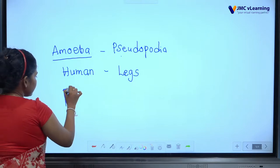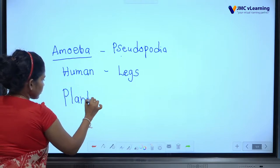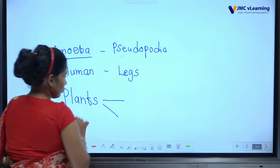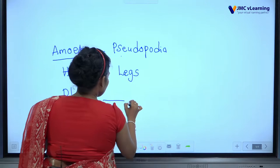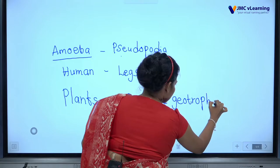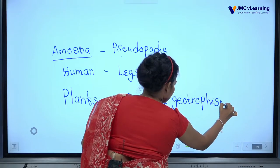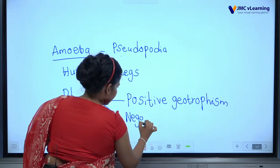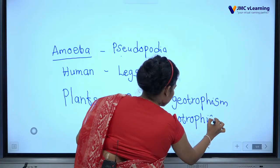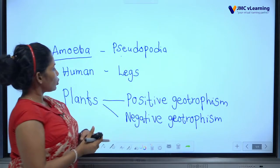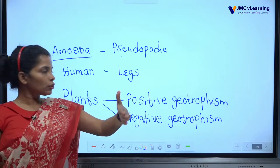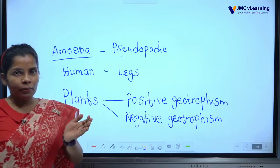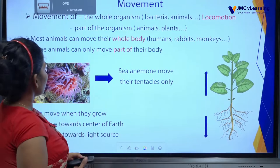These are some examples for movement. For plants, there is positive geotropism and negative geotropism. Those plants respond to stimulants. Now we have the idea about movement.